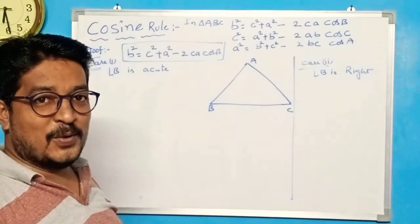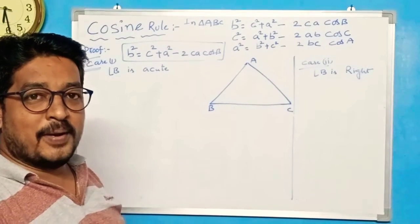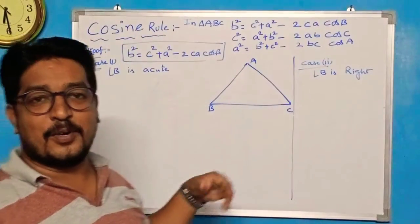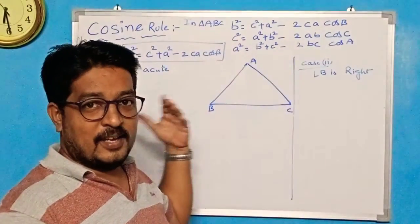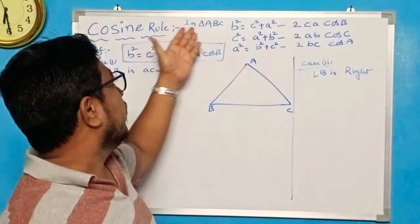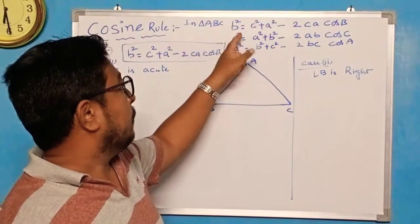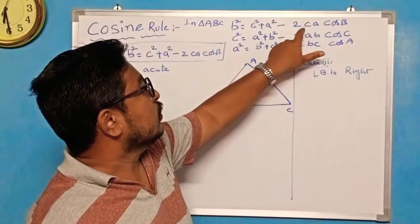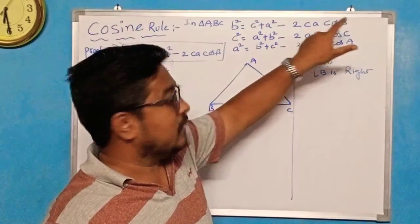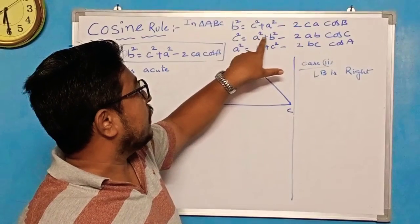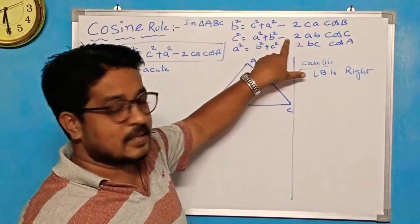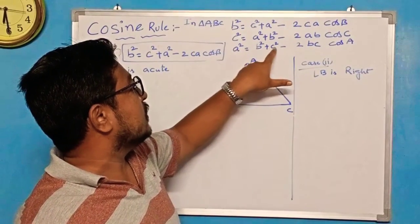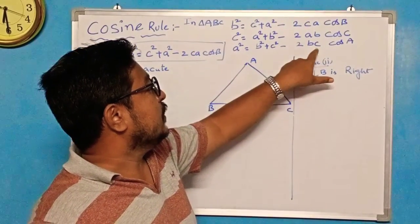Hello, Namaste. This is the Gauss Mass Academy. Today my topic is in properties of triangle only. It is the cosine rule. Already I discussed about the sine rule in the previous one. In cosine rule, in triangle ABC: B² = C² + A² − 2CA·cosB; C² = A² + B² − 2AB·cosC; A² = B² + C² − 2BC·cosA.